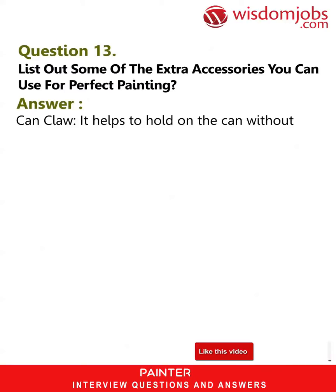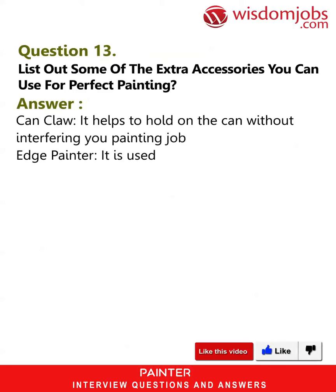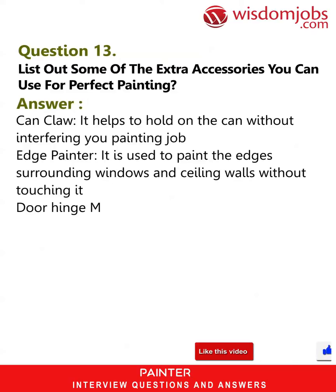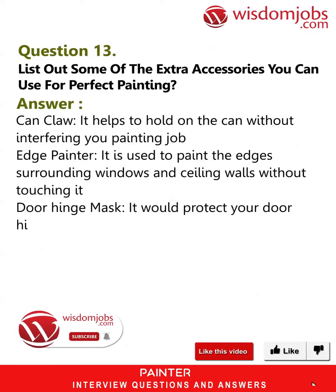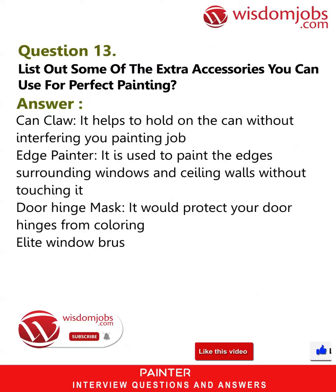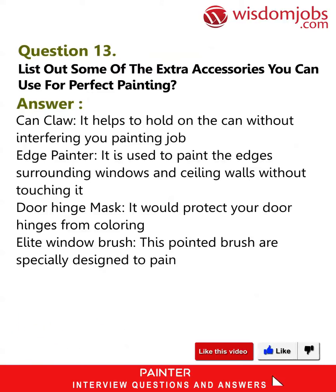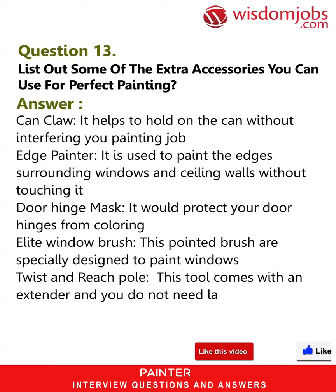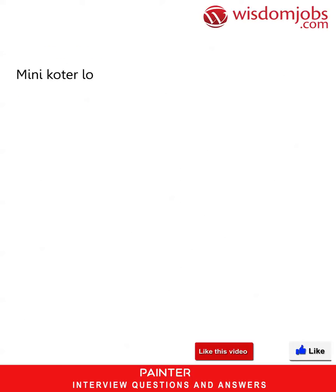Question 13: List some extra accessories you can use for perfect painting. Answer: Can claw — it helps to hold the can without interfering with your painting job. Edge painter — used to paint edges surrounding windows and ceiling walls without touching them. Door hinge mask — protects your door hinges from paint. Elite window brush — these pointed brushes are specially designed to paint windows. Twist and reach pole — this tool comes with an extender so you do not need a ladder or step stool.